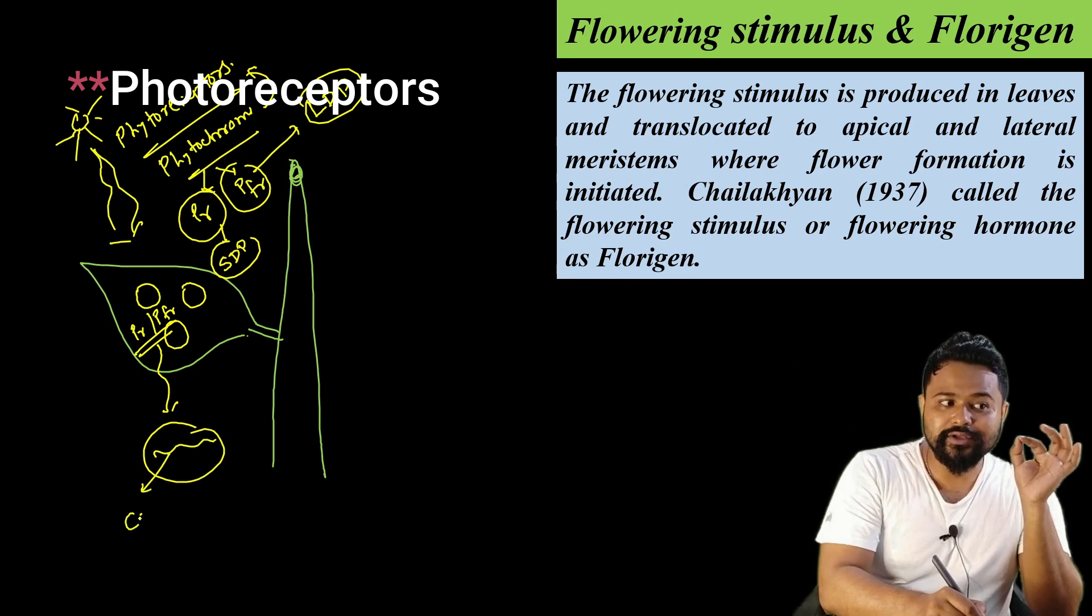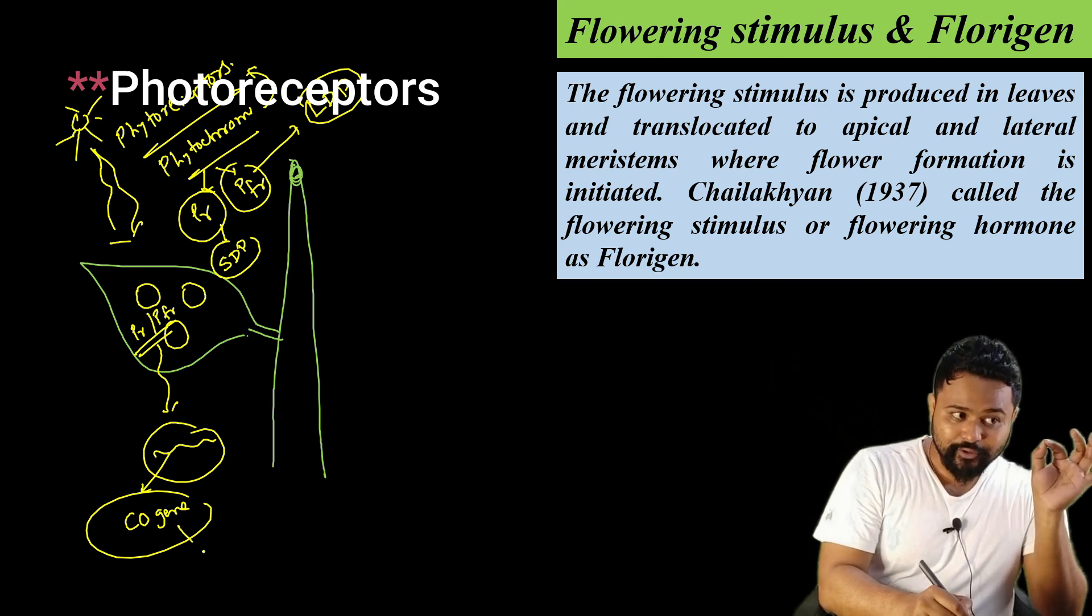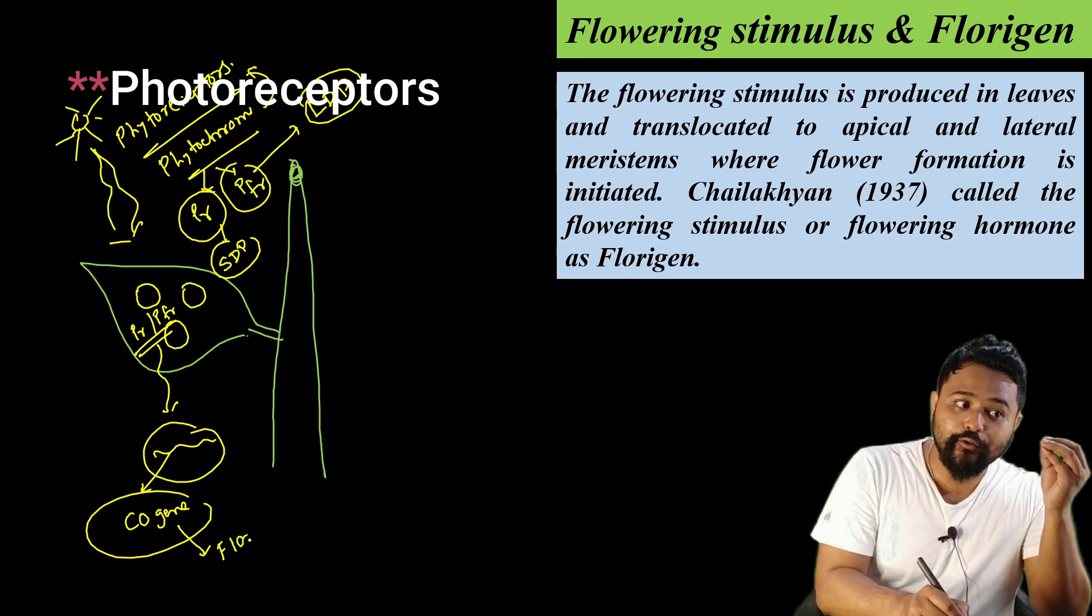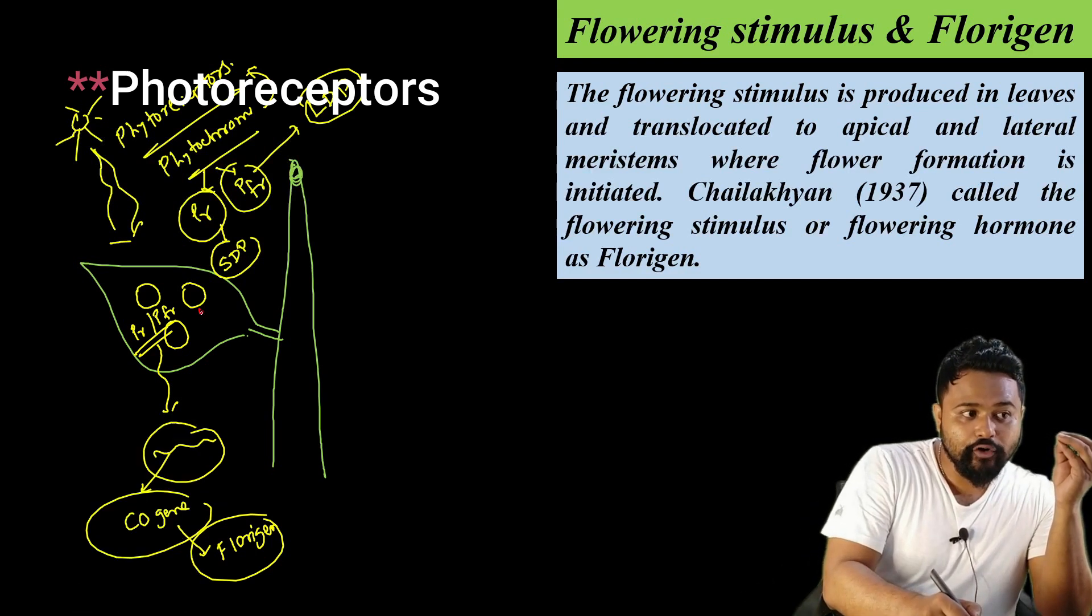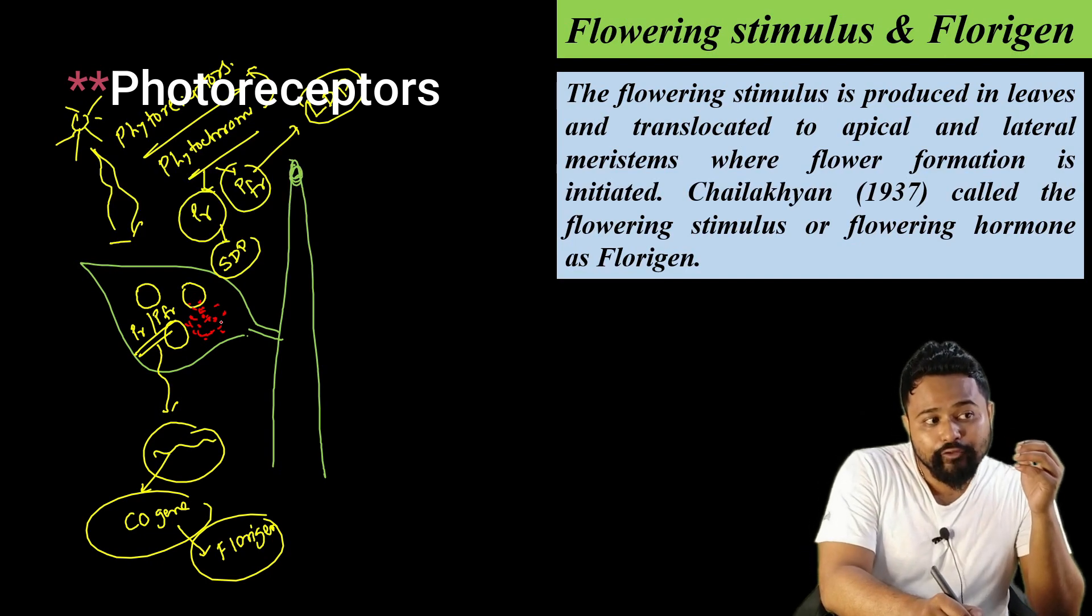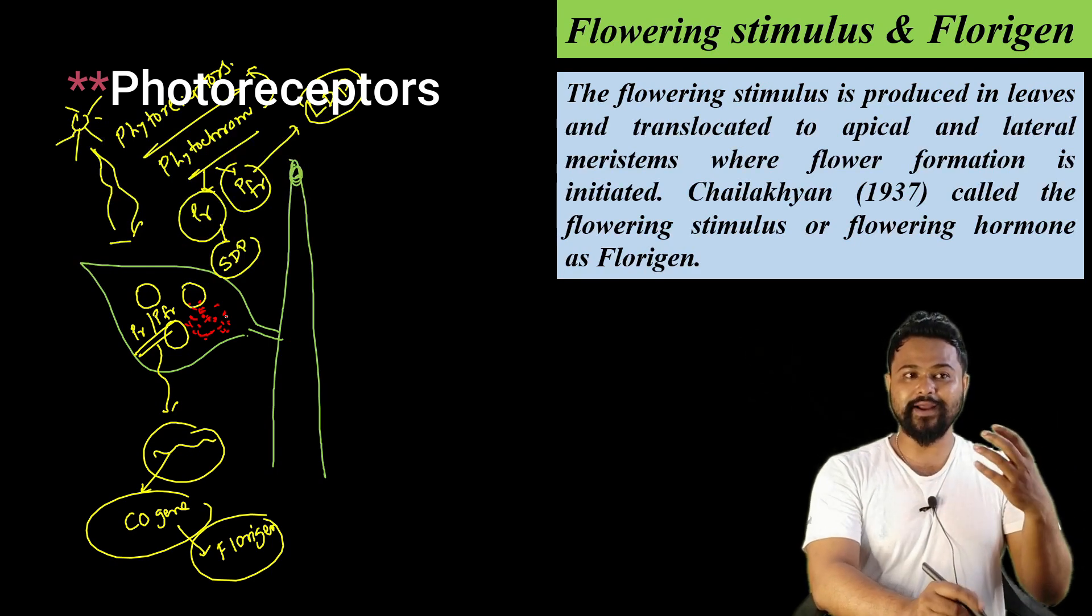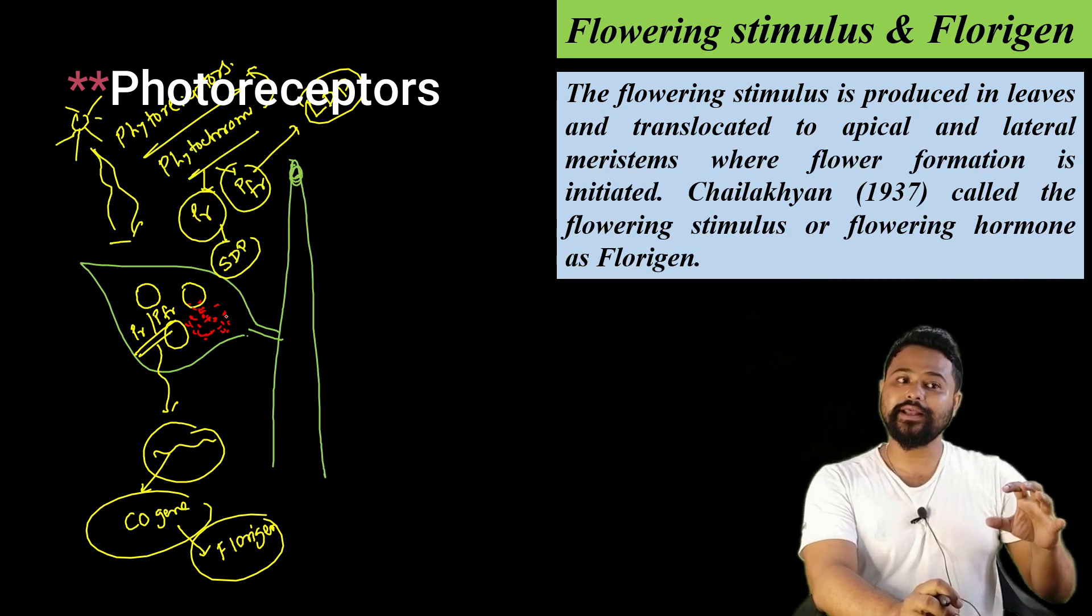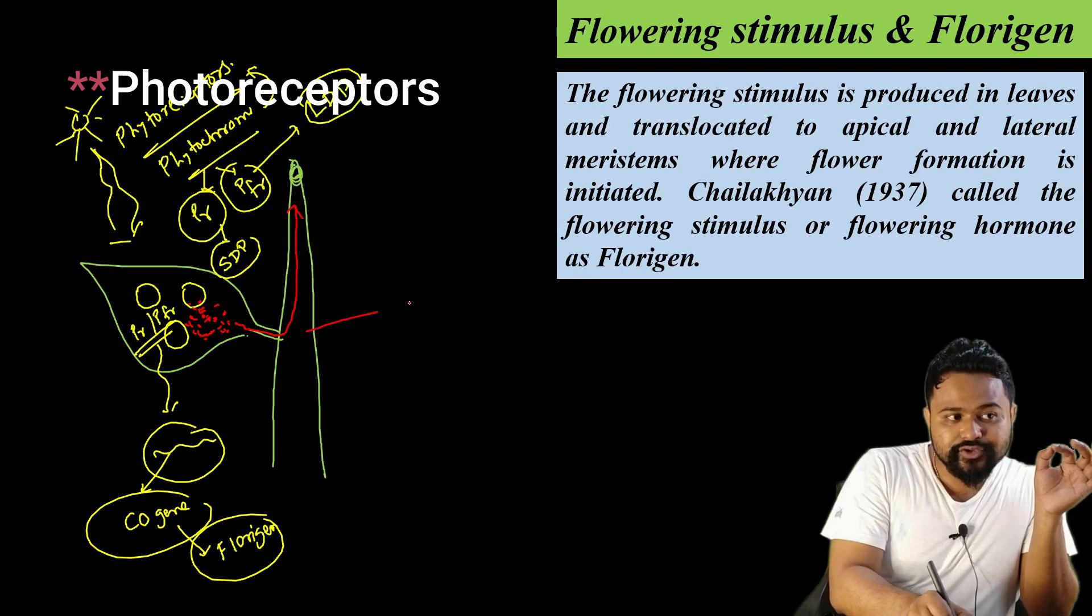This gene is called CO gene. The gene produces a hormone or chemical. This chemical is called florigen. But florigen is hypothetical - scientists have not isolated it yet. It's a hypothetical idea that some hormone or chemical called florigen exists.